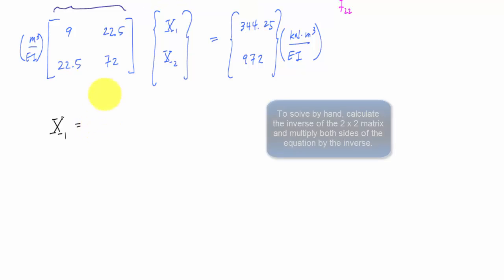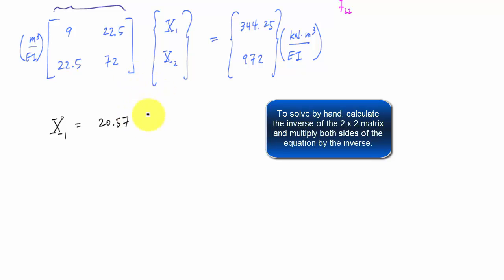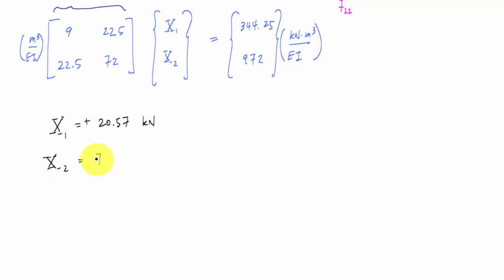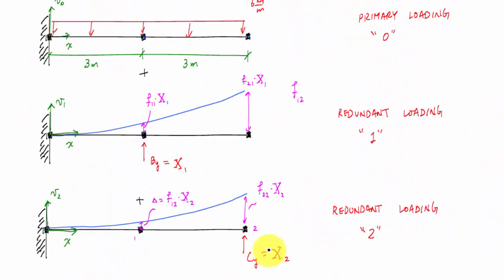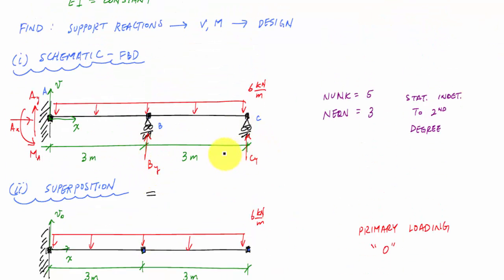For x1 we get 20.57 kilonewtons and we get a positive answer for that. For x2 we get 7.07 kilonewtons and also a positive answer for that, which means that the direction that we drew it in is good. If you recall x1 was by, x2 was cy right here, and we initially drew them pointing upwards in our original free body diagram. So that means by is 20.57 kilonewtons upwards and cy is 7.07 kilonewtons upwards.